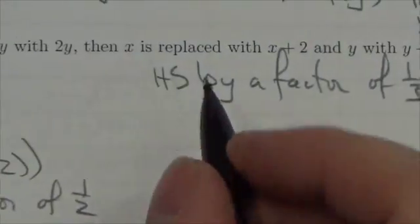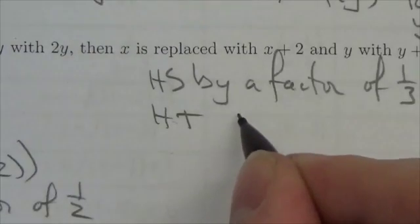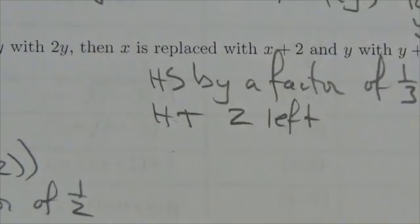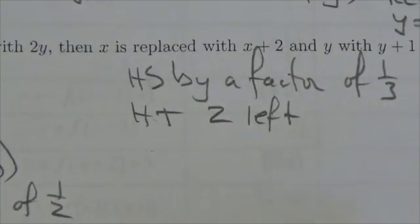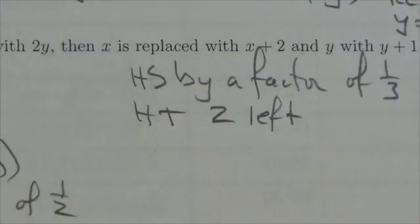And then I'd have to subtract the 2, which would be a horizontal translation to the left when I subtract the 2. And so those are the transformations that I would associate with those replacements.